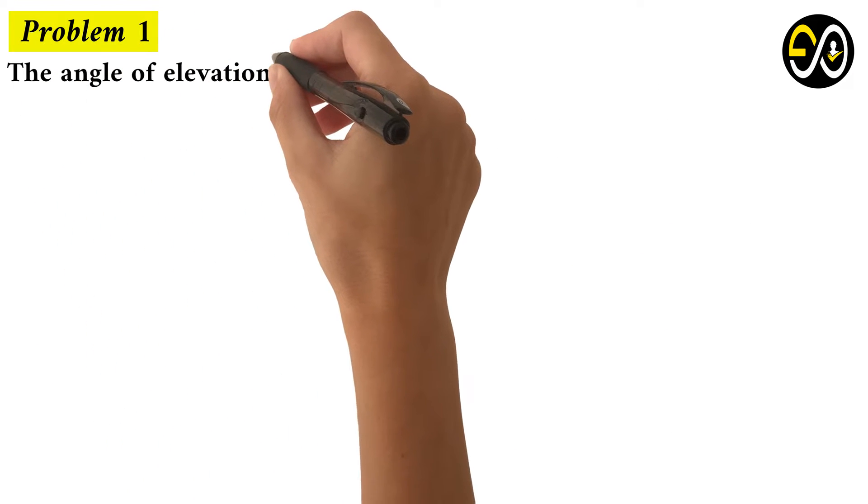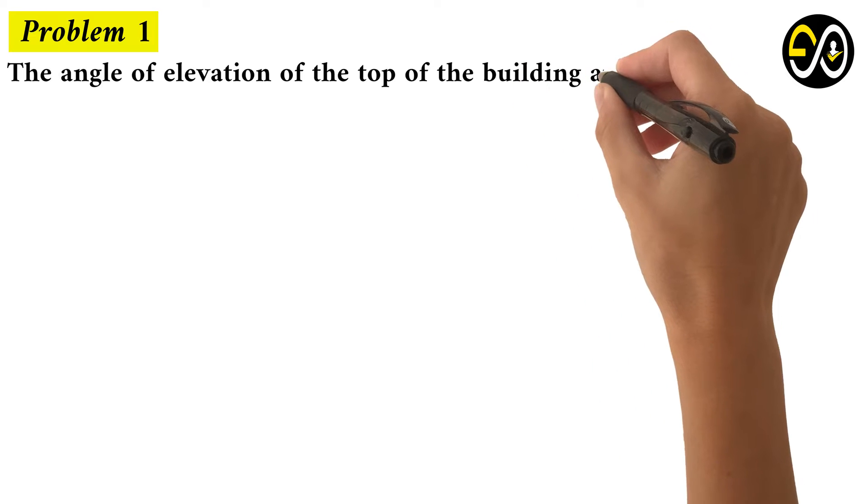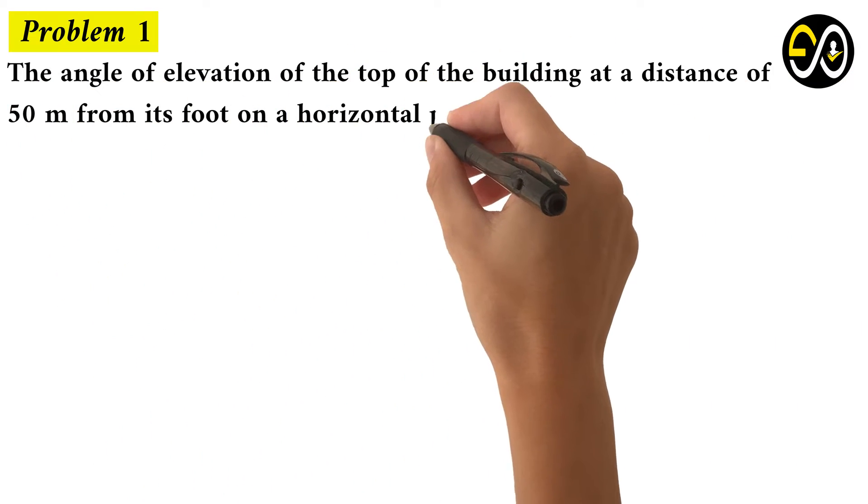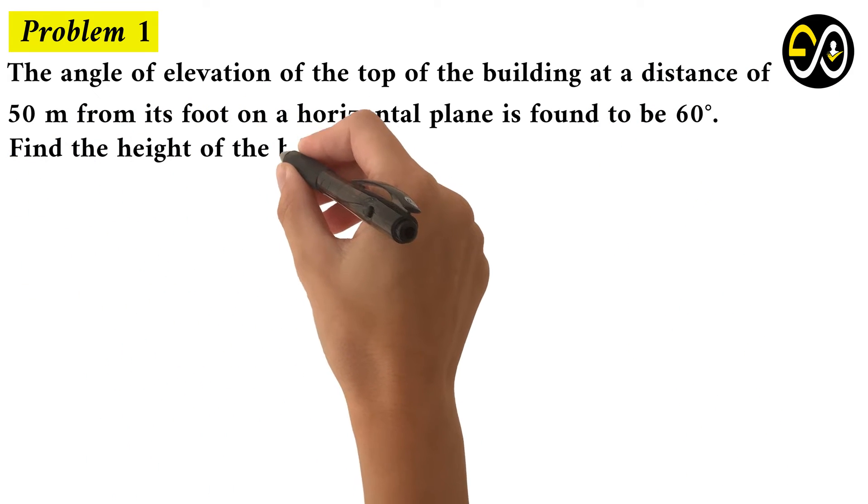The angle of elevation of the top of the building at a distance of 50 meters from its foot on a horizontal plane is found to be 60 degrees. Find the height of the building.